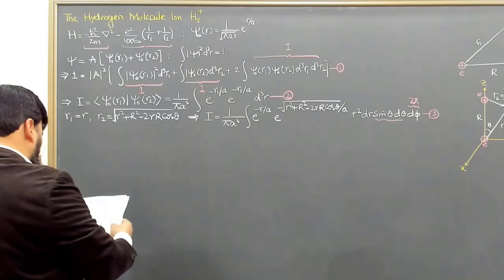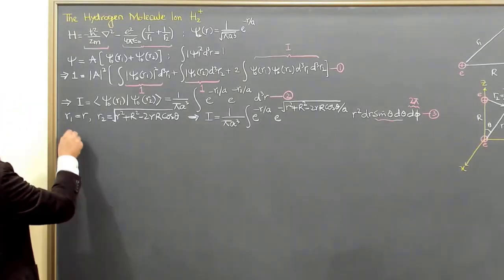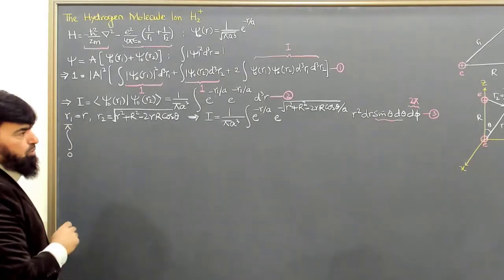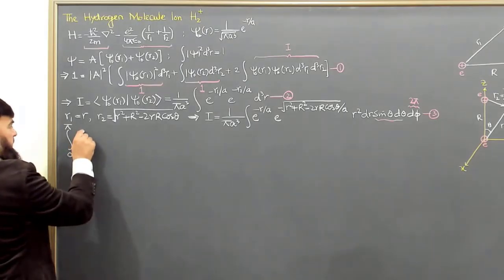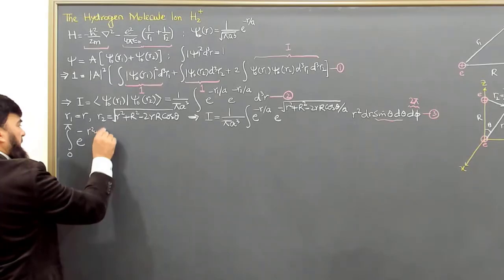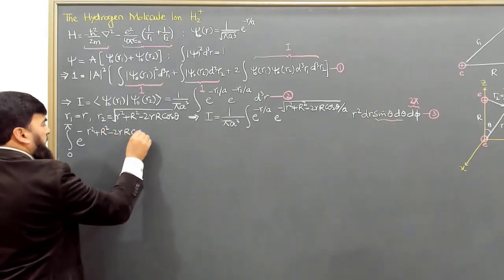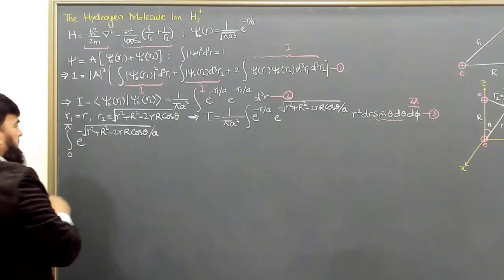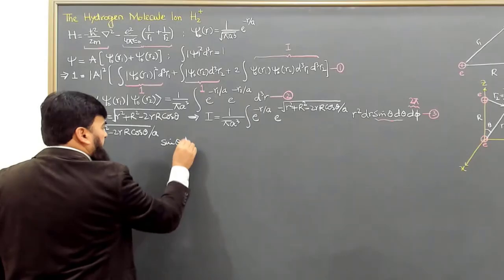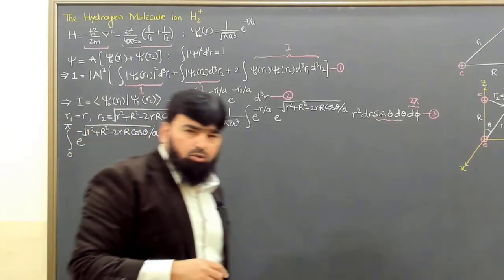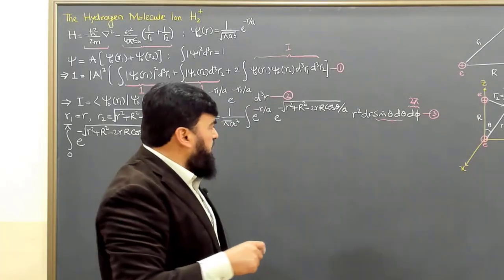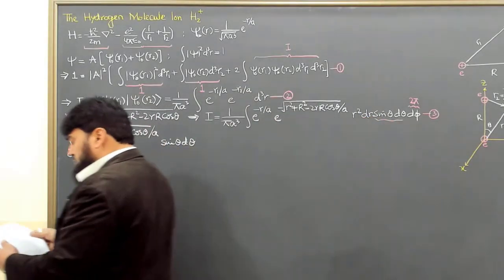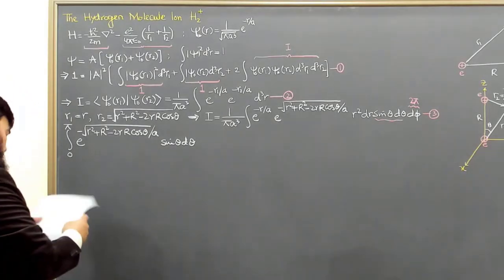Inside equation 3, let me first solve the θ integral. In equation 3, the θ integral has θ varying from 0 to π in spherical polar coordinates, integrating e to the power minus square root of r² + R² − 2rR cosθ divided by a, times sinθ dθ. Once we solve the θ integral, we put that result back and then solve the integral for r.